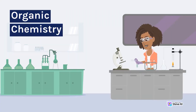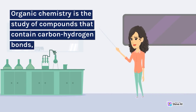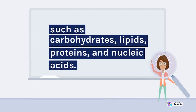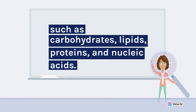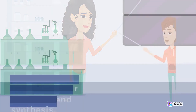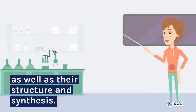Organic Chemistry. Organic chemistry is the study of compounds that contain carbon-hydrogen bonds, such as carbohydrates, lipids, proteins, and nucleic acids. Organic chemistry focuses on the properties, behavior, and reactions of these compounds, as well as their structure and synthesis.